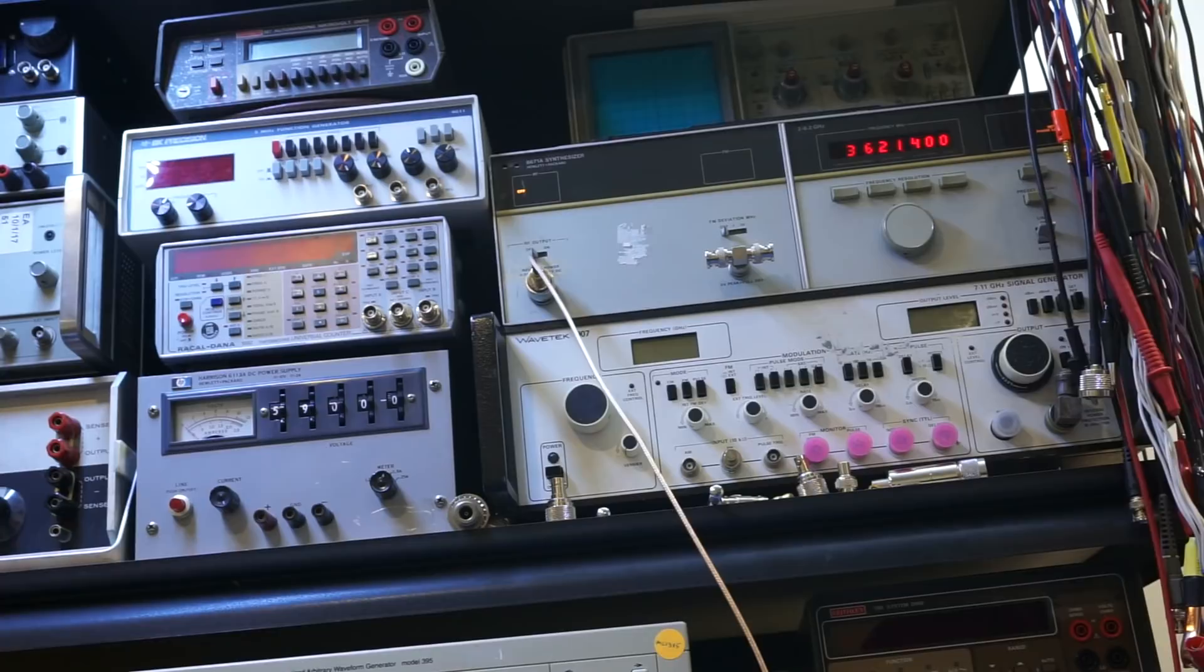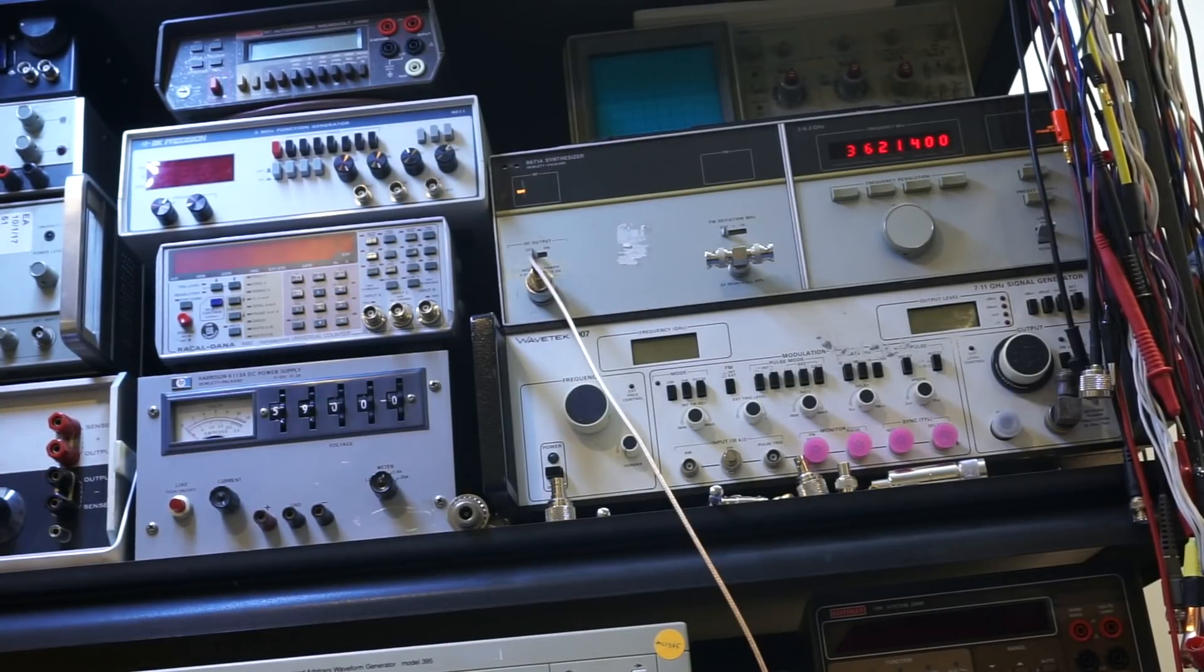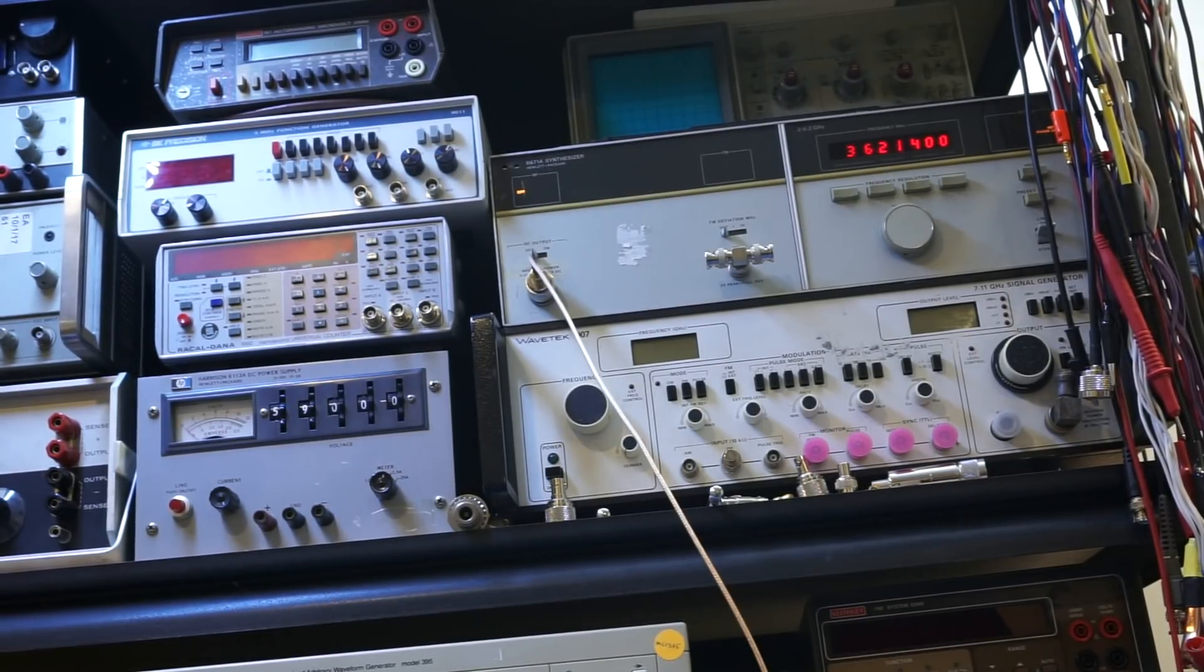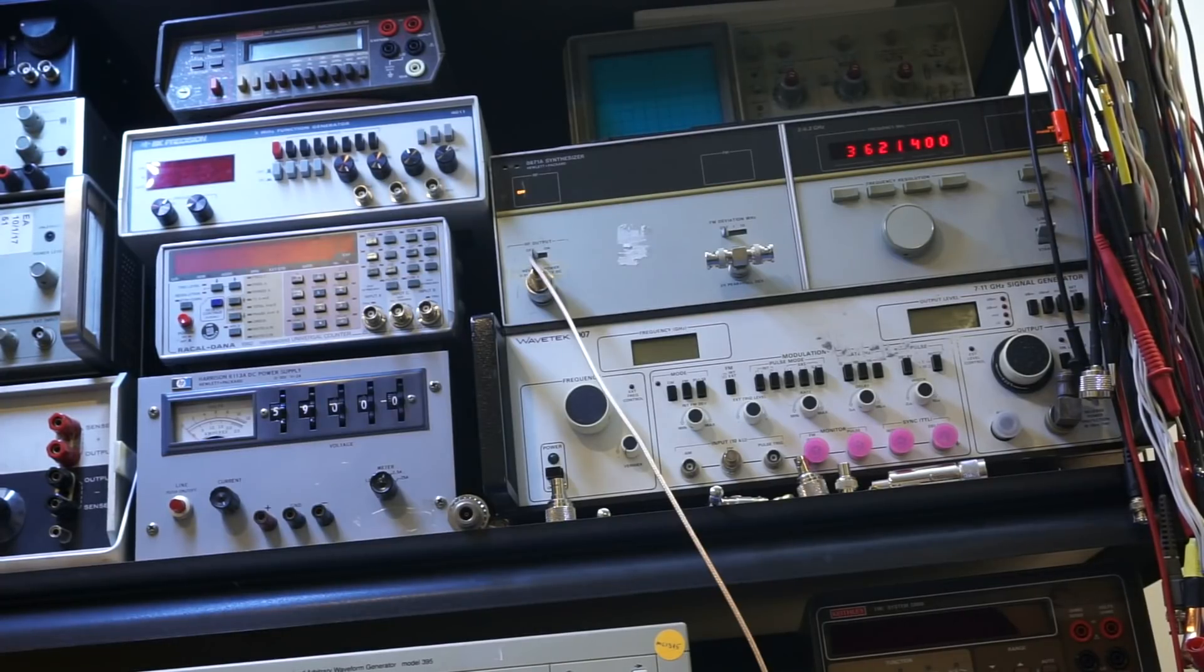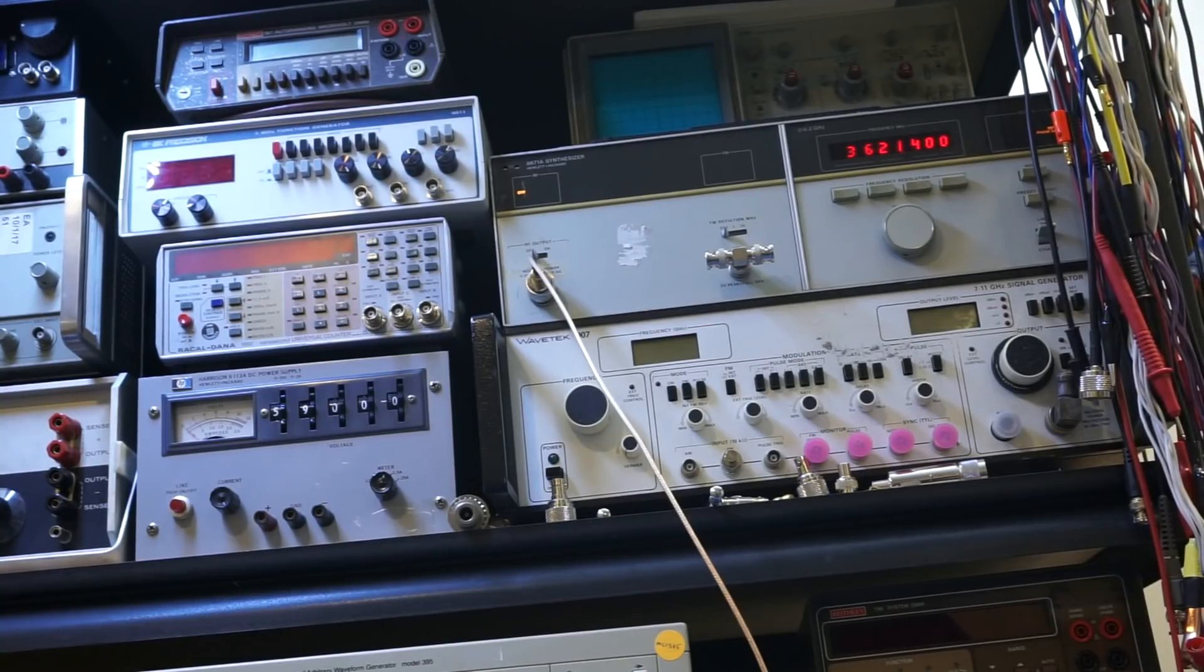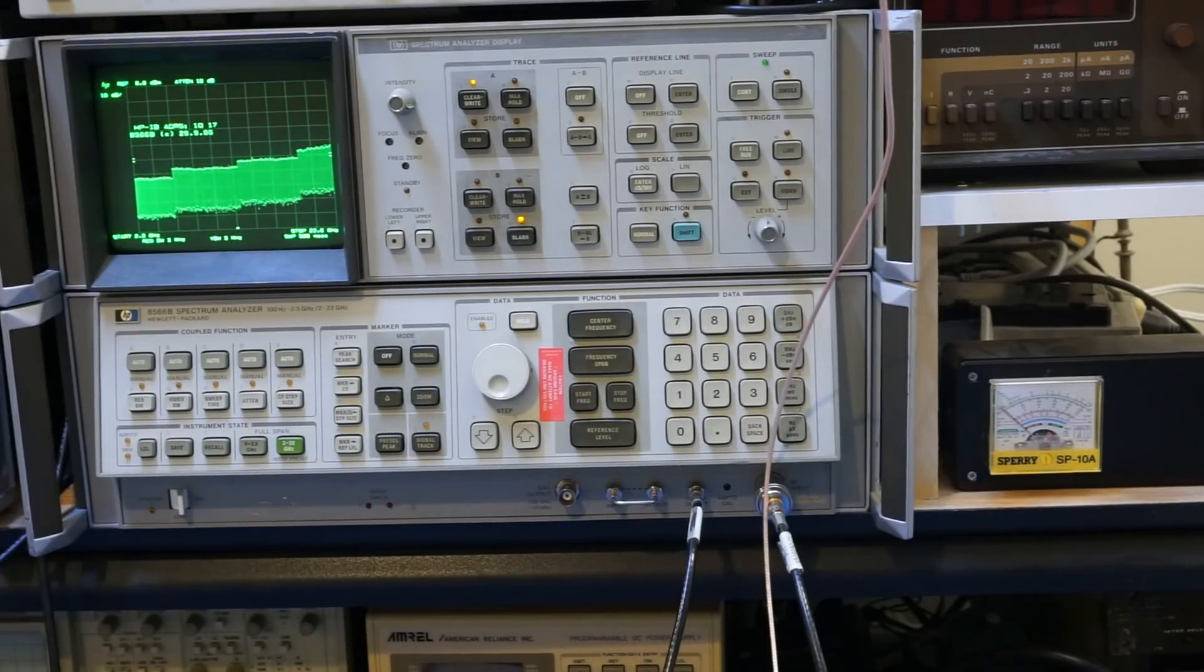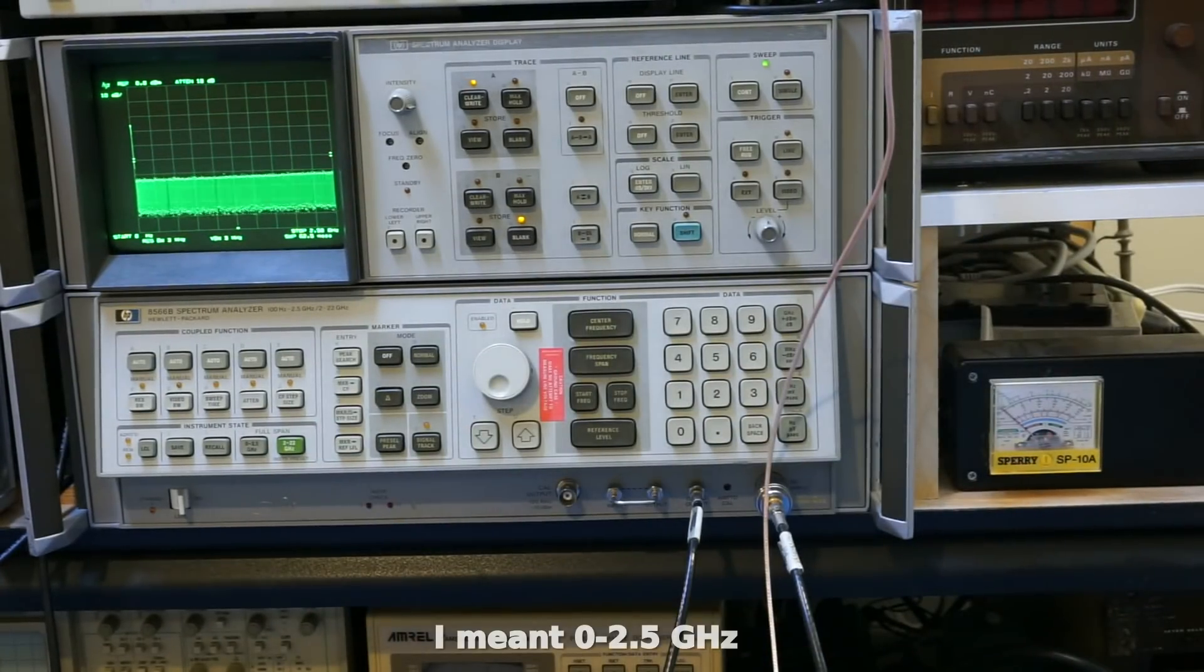Now with that turned on, we're going to proceed with turning on our 8671 synthesizer. Turn it on. As you can see right now, we are already at 3.6214 GHz. That's because last time when I powered it down, before that I set it to that frequency already. The 8671 has an internal battery to save whatever the setting you had last, which is kind of nice. But now, if you look carefully, we have the output set to off so that we will turn it on as soon as we adjust our spectrum analyzer here.